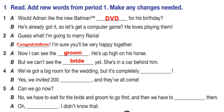Four: 'We've got a big room for the wedding, but it's completely full.' 'Yes, we invited 200 guests and they've all come.' Five: 'Now we have to wait for the bride and groom to go first, and then we have to follow them.' 'Oh, all right — I didn't know that.' Please check your answers.